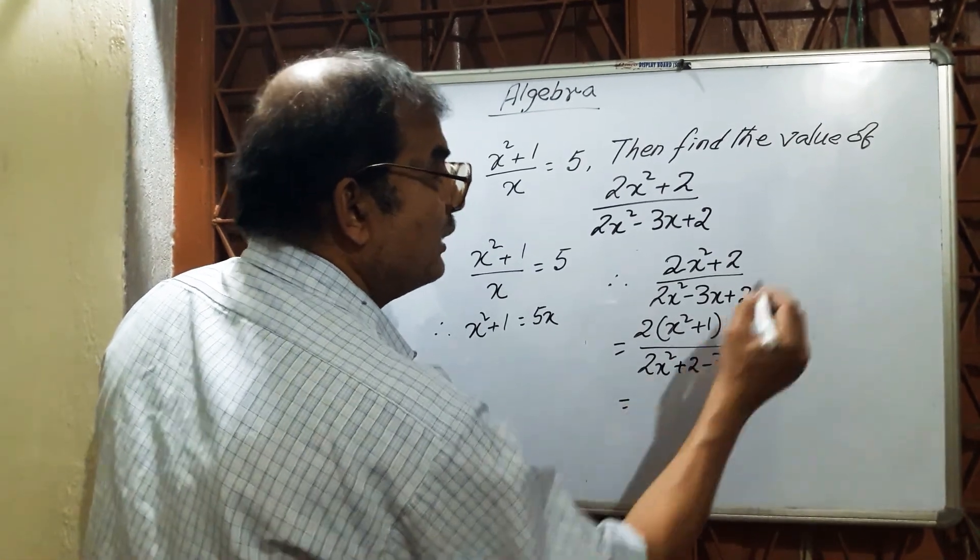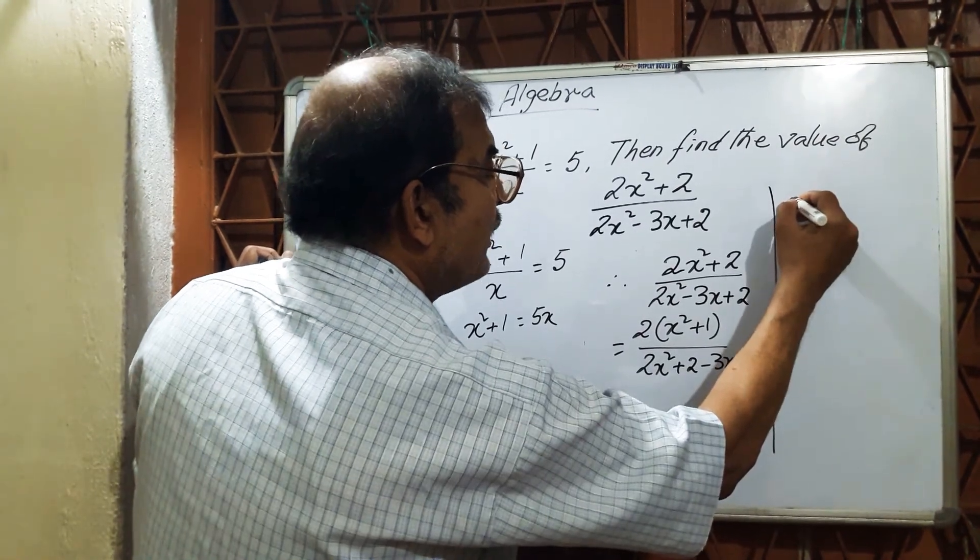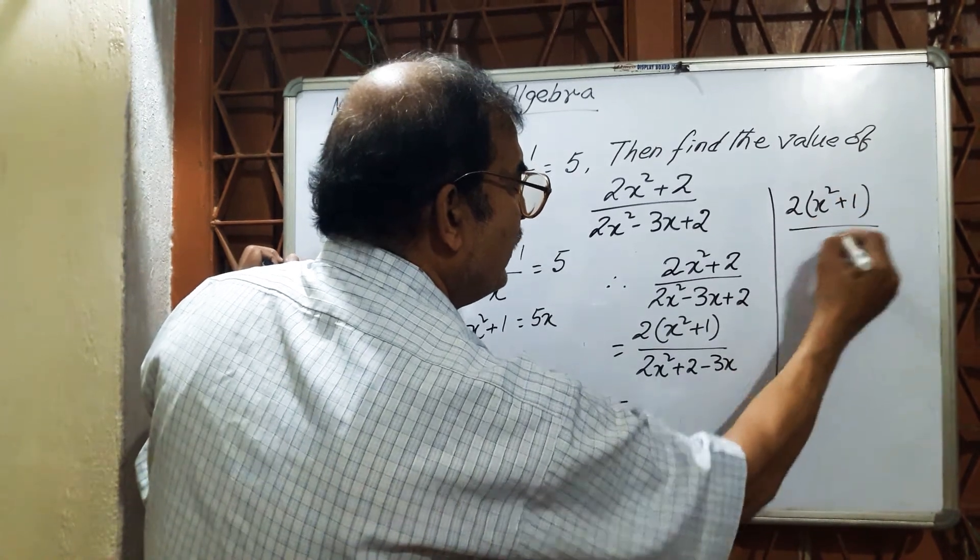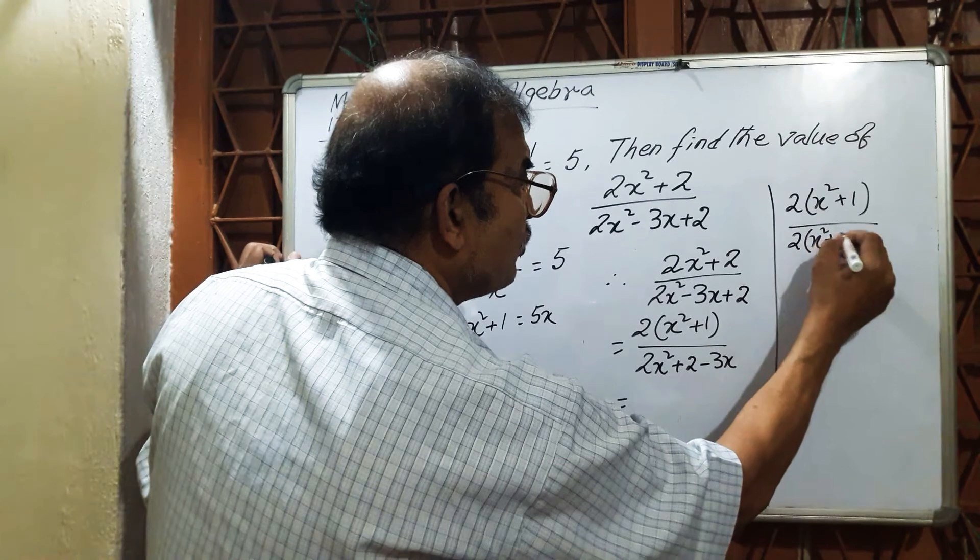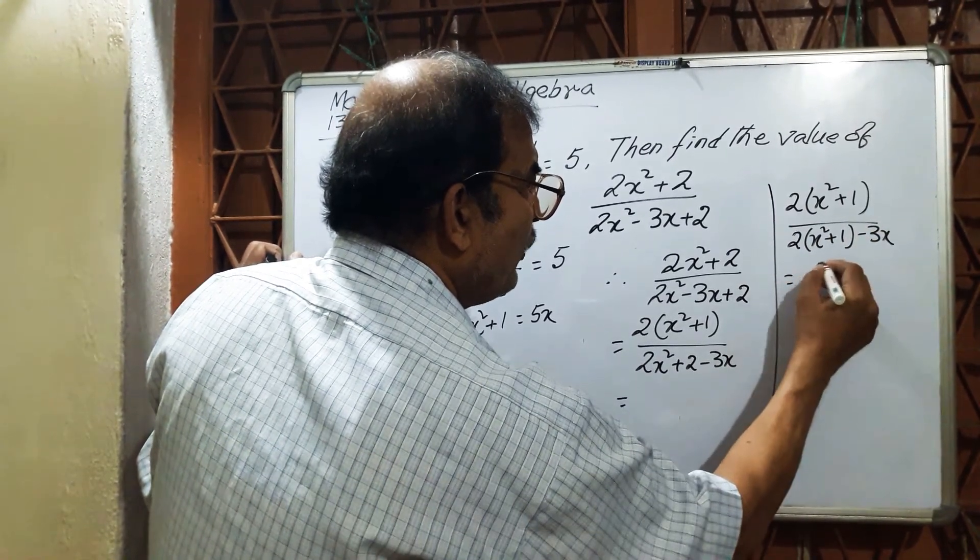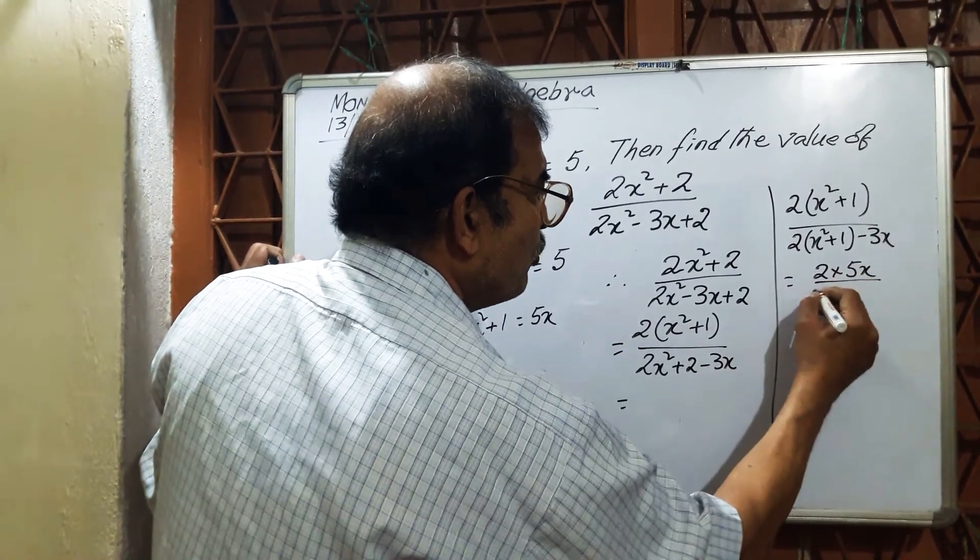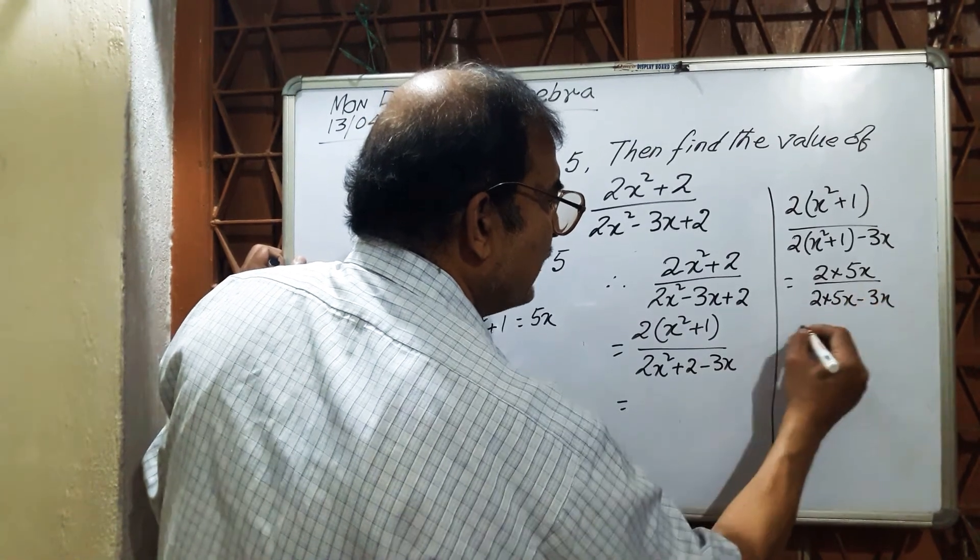2(x² + 1) divided by 2x² + 1 - 3x equals 2(5x) divided by 2(5x) - 3x, that is 10x by 7x, which equals 10/7 = 1 and 3/7.